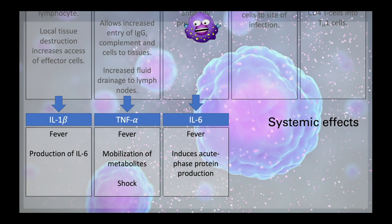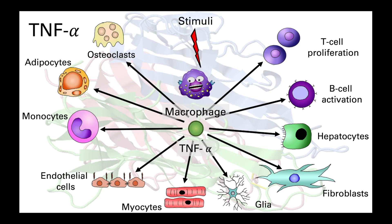Let's take a closer look at two of these key cytokines: TNF-alpha and interleukin-6. TNF-alpha is released by a wide range of cells, but in this example a stimulus is causing a macrophage to release TNF-alpha, which acts on any cell or system that expresses a TNF-alpha receptor — and it's important to note that it acts on both immune and non-immune cells. For example, endothelial cells, activating them and allowing the movement of neutrophils and plasma proteins into the tissue, or liver hepatocytes that drive the production of acute phase proteins.